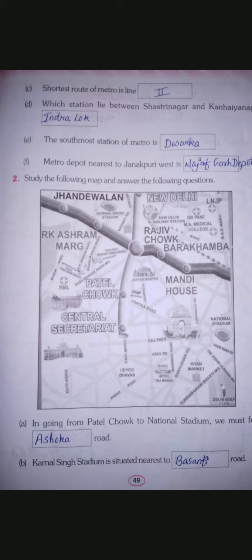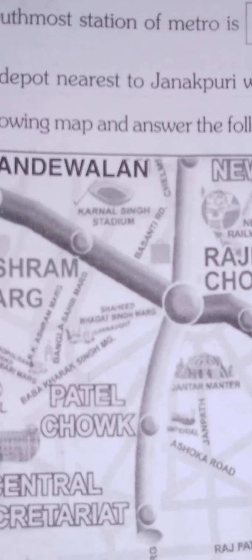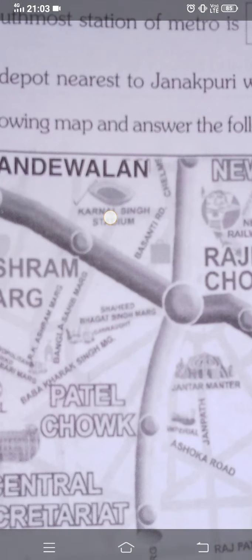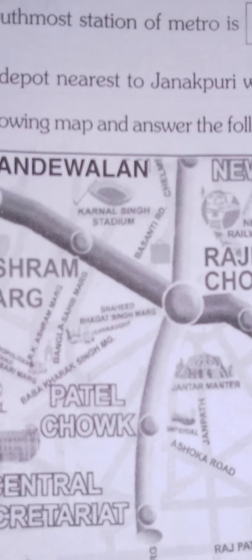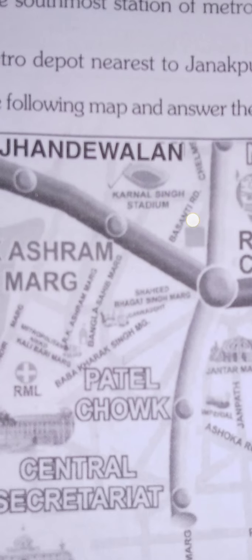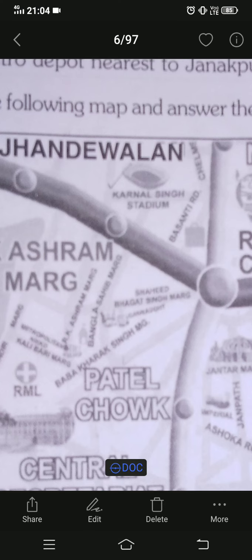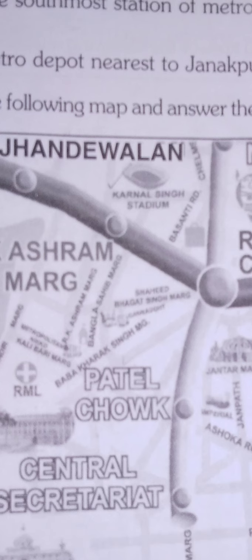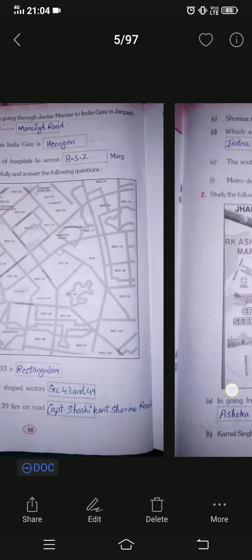Next: Karnal Singh Stadium is nearest to which road? Karnal Singh Stadium is here on the map. The road near it is Basanti Road. Note that 'Rd' is the short form of road. So you will write Basanti Road as the answer. Next question: the best route going from Jantar Mantar to India Gate is Janpath, then Azad Road, and then which road?